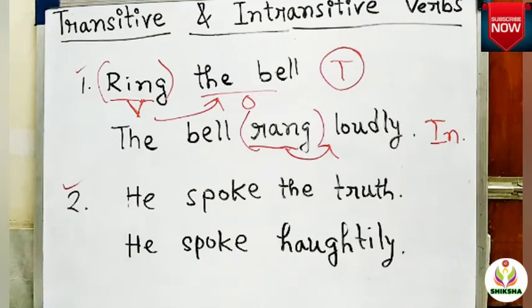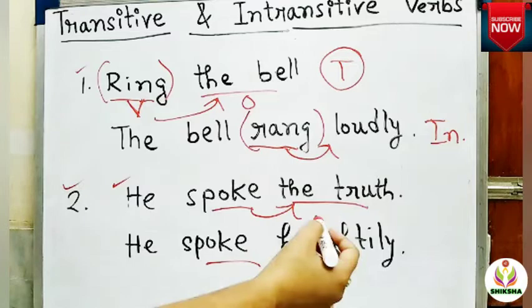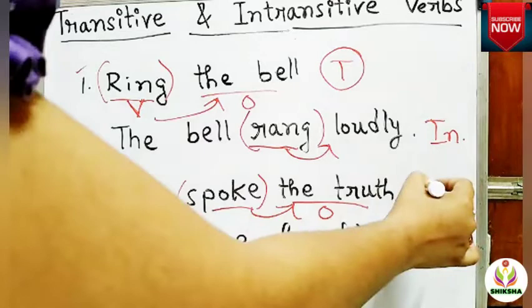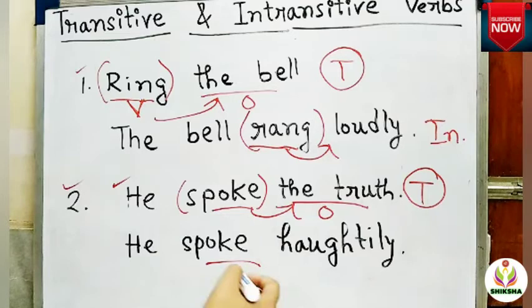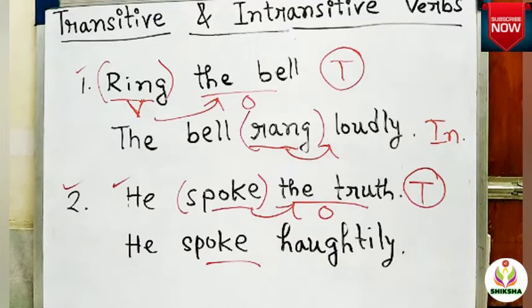In another example, 'He spoke the truth' and 'He spoke hotly.' In the first sentence, he spoke what? He spoke the truth — so 'the truth' is the object and spoke is used as a transitive verb. But in 'He spoke hotly,' if I ask he spoke what or he spoke whom, there is no answer, so there is no object present and the verb is used as an intransitive verb. So a verb can be used both as transitive and intransitive.